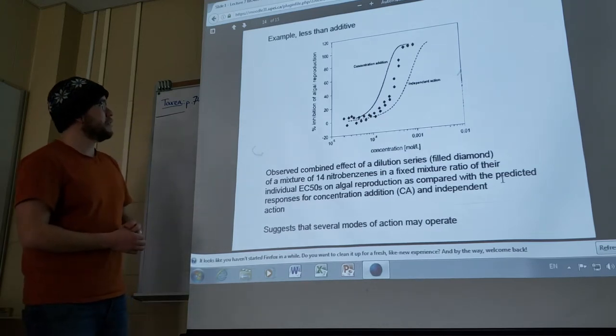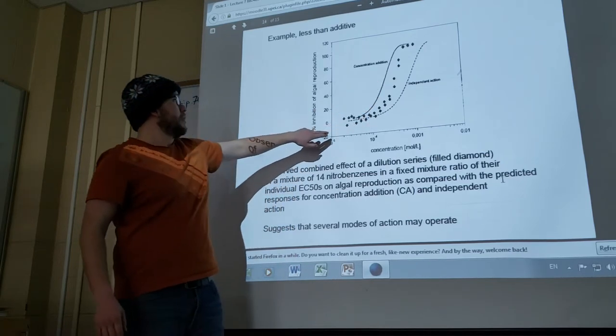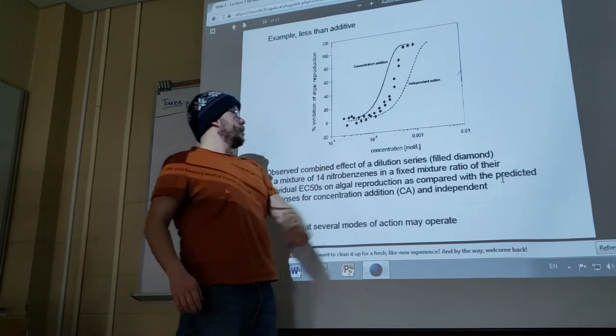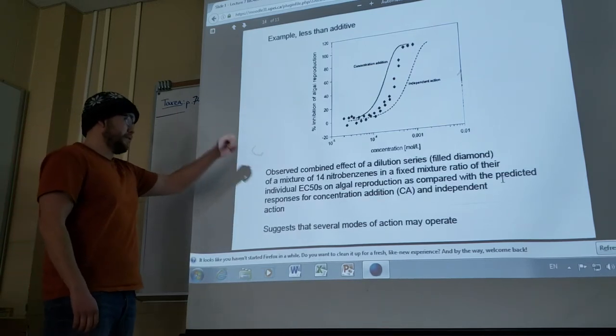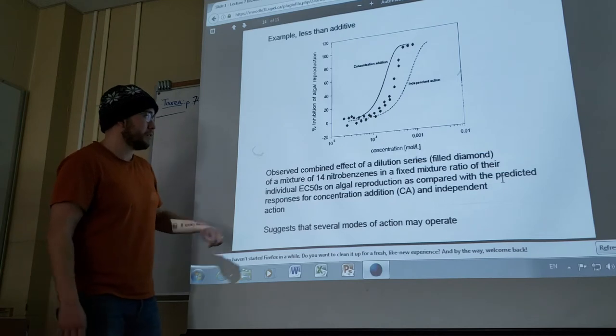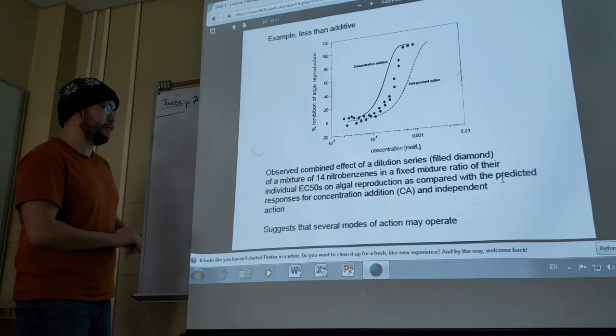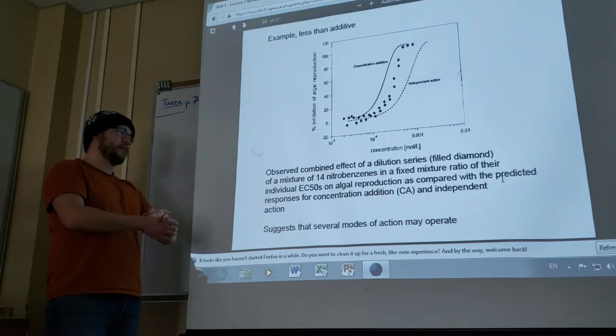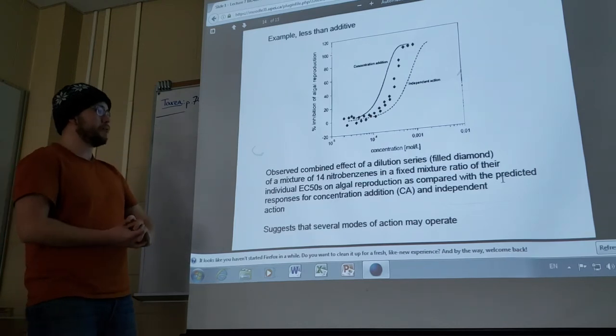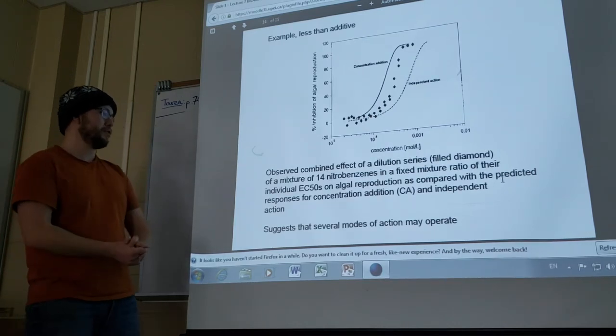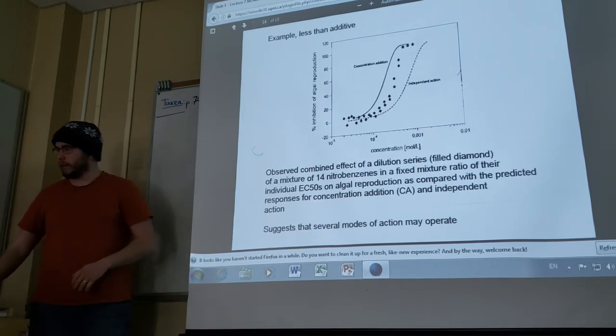Here's an example of less than additive mixtures. You can see the concentration addition up here and the independent action there, the dotted line, and the inhibition of algal reproduction on the left on the y-axis and the concentration in moles per liter on the bottom on a log scale. Observed combined effects of a dilution series of a mixture of 14 nitrobenzenes in a fixed mixture ratio of their individual EC50s on algal reproduction as compared with the predicted responses for concentration addition (CA) and independent action suggests that several modes of action may operate.